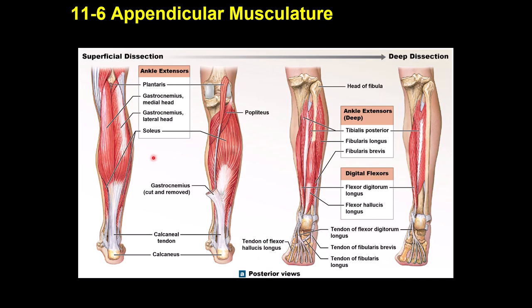In the leg, gastrocnemius — with two heads — causes flexion of the knee and plantar flexion of the ankle. Plantaris causes flexion of the knee and plantar flexion. Popliteus, located behind the knee, causes flexion of the knee. Soleus also causes plantar flexion, which is anatomically equivalent to ankle extension.